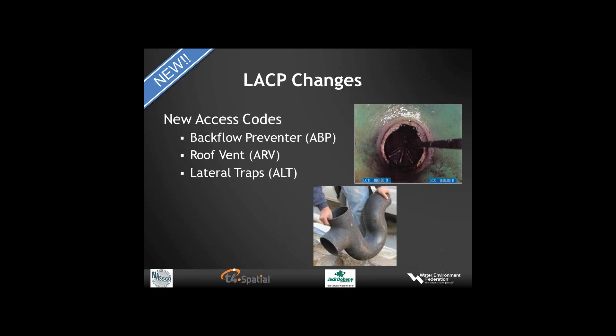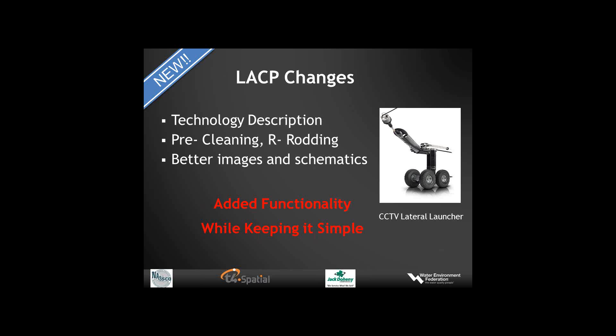Moving on to the Lateral Assessment and Certification Program changes: we have new codes. For backflow preventers, the new code will be ABP. To identify a roof vent, the new code is ARV. For lateral traps, the new code is ALT. We've made changes to address newer technologies available for doing lateral inspections, and those new technologies are described in the new manual. For example, the CCTV lateral launcher will be described as a technology for lateral inspections. For pre-cleaning specific to laterals, we've added code R for rodding. Better images and schematics are now available throughout the manual and training materials, significantly increasing functionality while keeping the program simple.